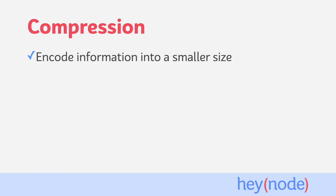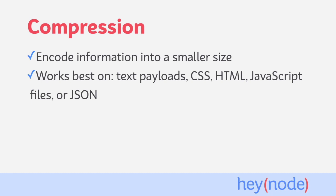Compression is the process of encoding information into a smaller size than it originally occupied. Compression is most efficient at reducing sizes for text-based payloads, such as CSS, HTML, or JavaScript files, as well as JSON.